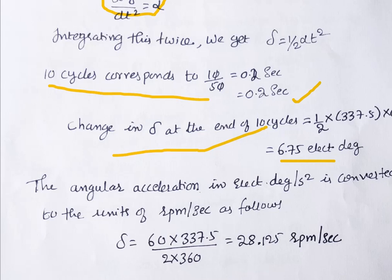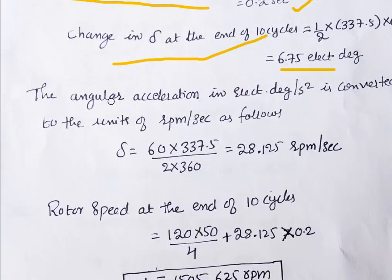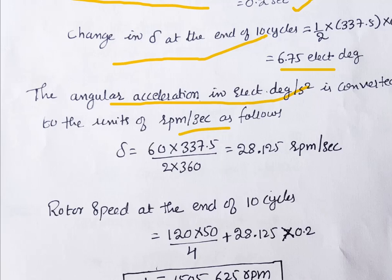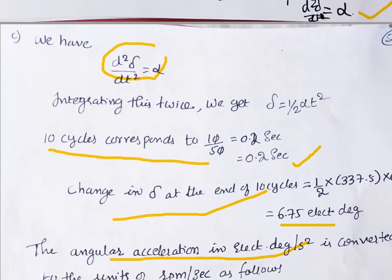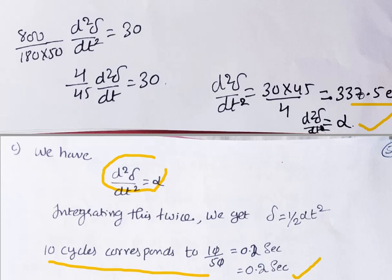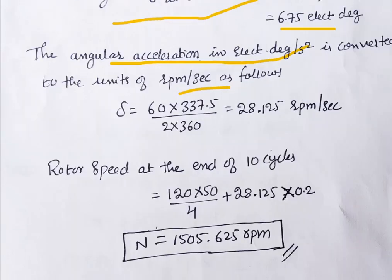To convert the angular acceleration from electrical degrees per second to rpm per second: Δn = 60 × 337.5 / (2 × 360) = 28.125 rpm per second. This gives the rate of speed change due to the net accelerating power.